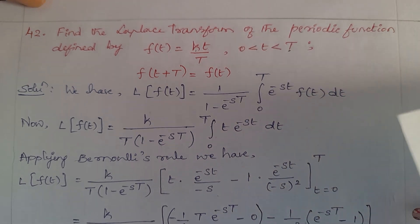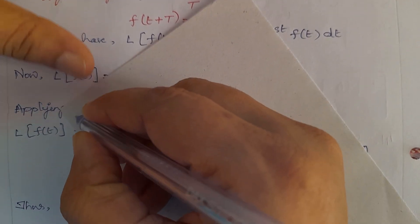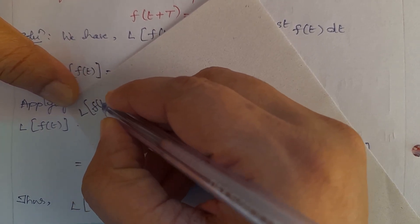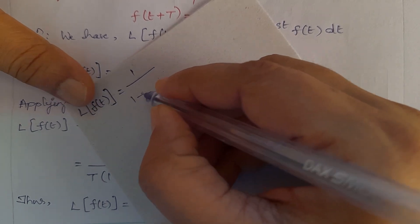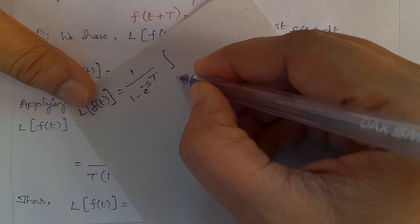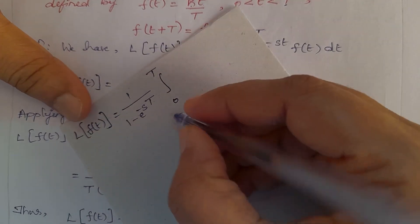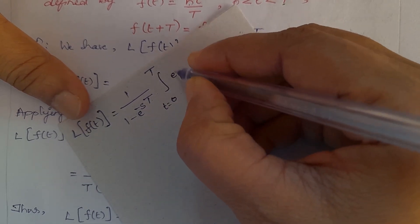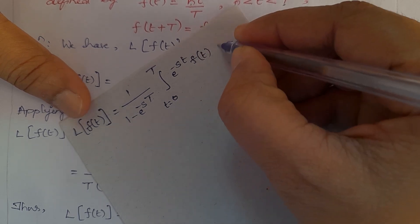First, write down the Laplace Transform of the periodic function: L{f(t)} = 1/(1 - e^(-sT)) · integral from 0 to T of e^(-st) · f(t) dt, because t varies from 0 to T.